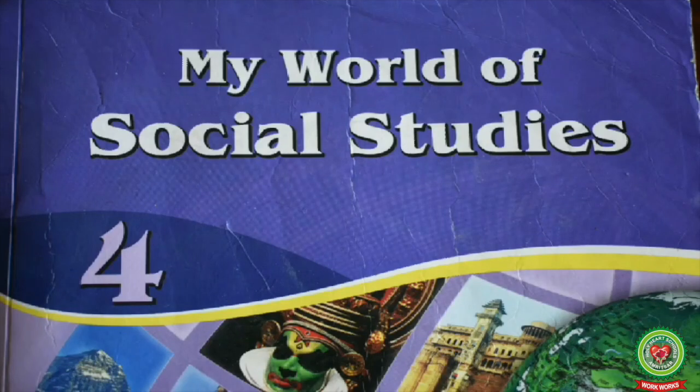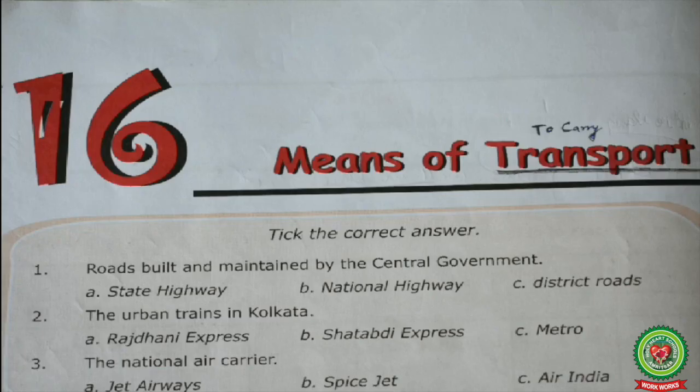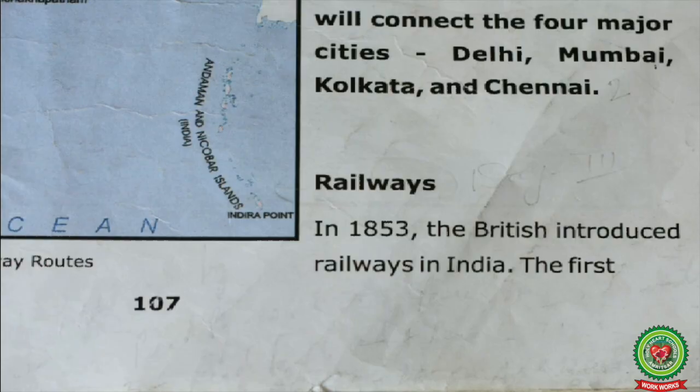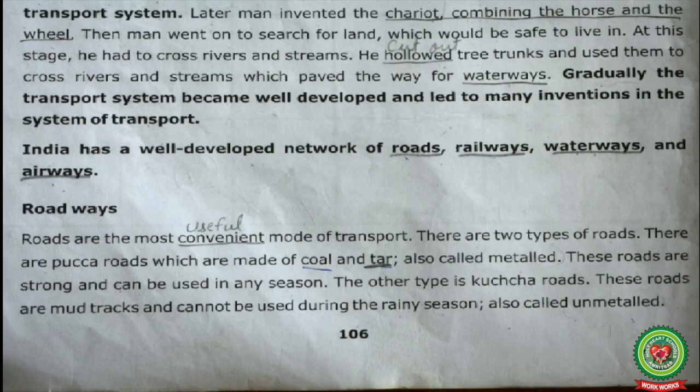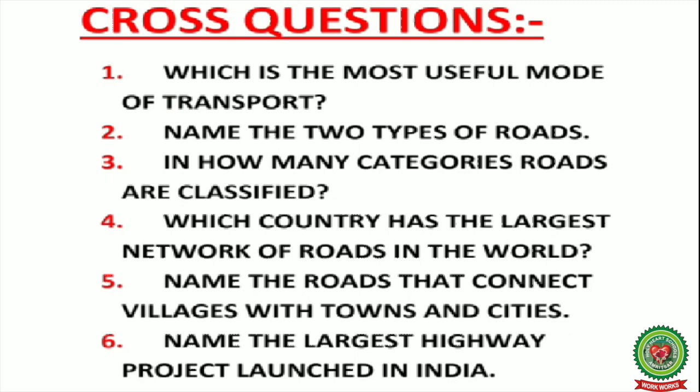Hello students, welcome back to SSD class. Take out chapter number 16, means of transport, and take out page number 107. In the last class we did about roadways and here are some questions regarding that: first, which is the most useful mode of transport? Second, name the two types of roads. Third, in how many categories are roads classified? Fourth, which country has the largest network of roads in the world? Fifth, name the roads that connect villages with towns and cities.